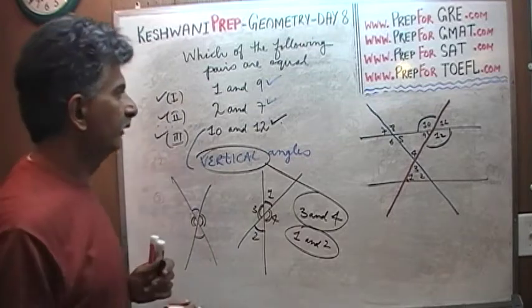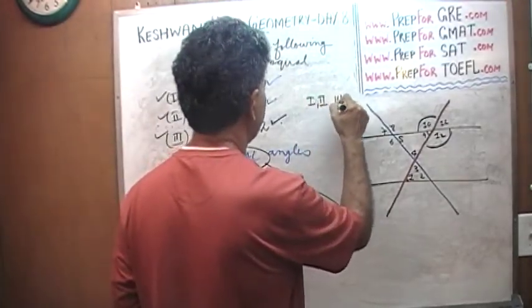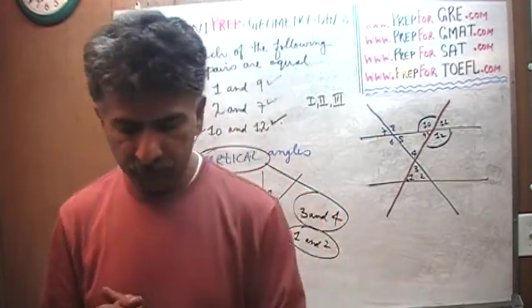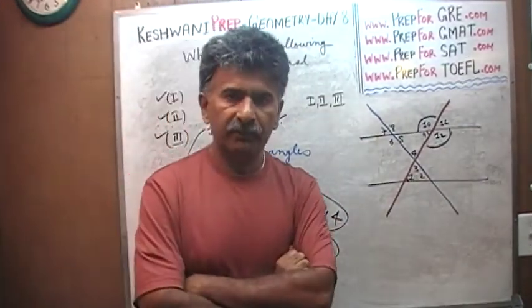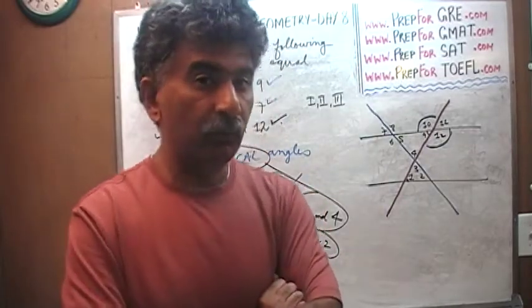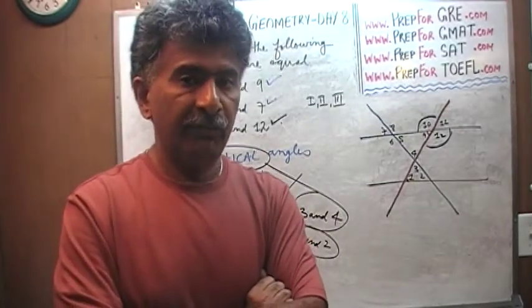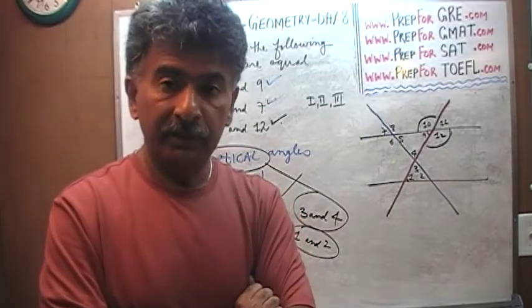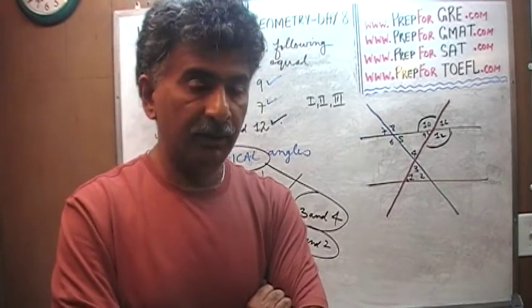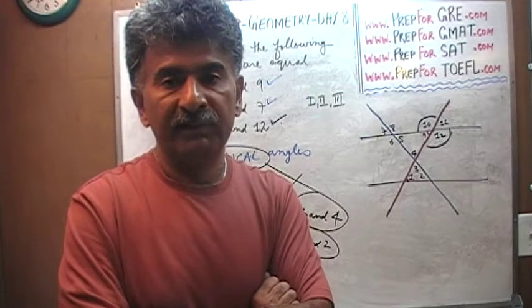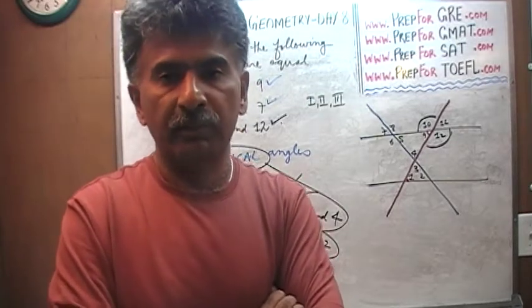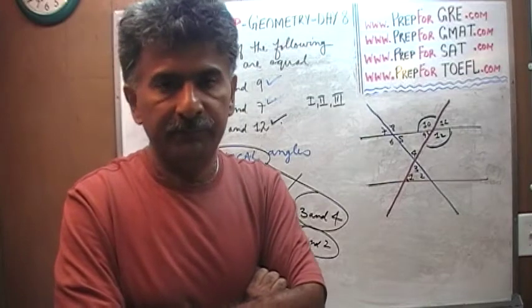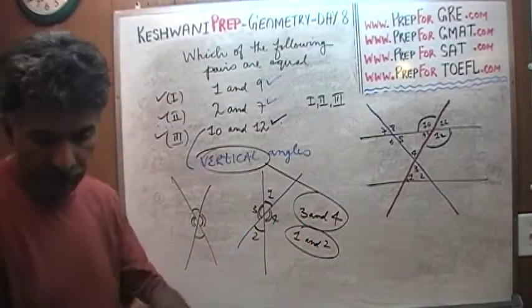We are done for today with parallel lines. To summarize one more time: when two parallel lines are intersected by a third line, three things happen — we get small and large angles, any two angles that look equal are equal, and the sum of any small and large angle is 180. Today was day number 8. I will probably do two more days — nine and ten — covering basic elementary geometry concepts, so that when we start solving SAT, GRE, and GMAT problems we can hit the ground running.